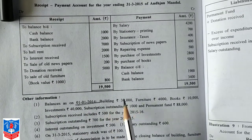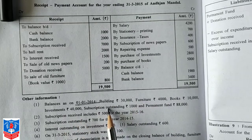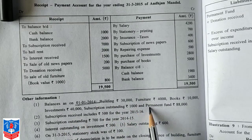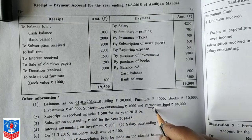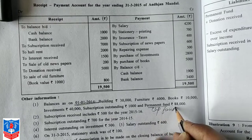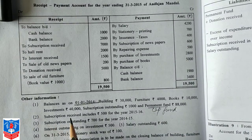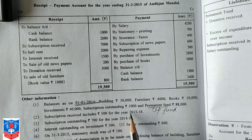Balances as on 1st April — this means opening balance is given. It includes building, furniture, books, investment, subscription outstanding, and permanent fund, that is your capital fund. Subscription received includes 500 for the year 15-16.